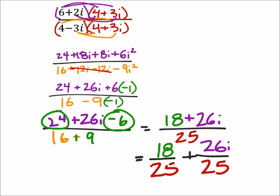And that's a good question. If we could simplify 18 and 25 or 26 and 25, one or both, then we would simplify them. But in this case, neither of them can be.